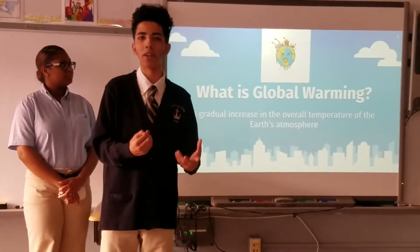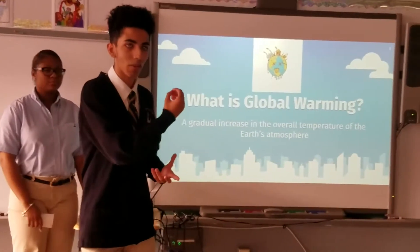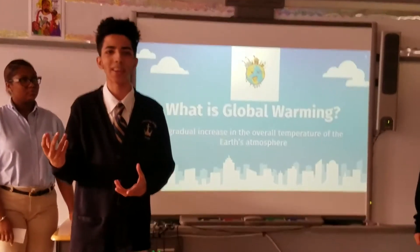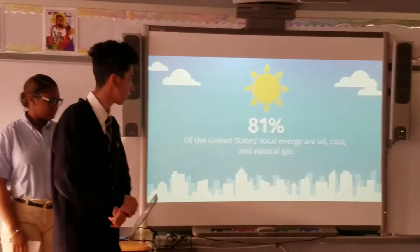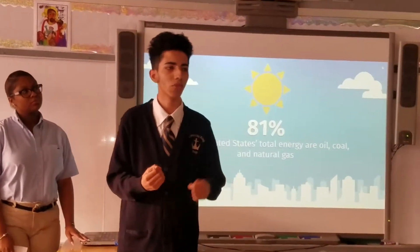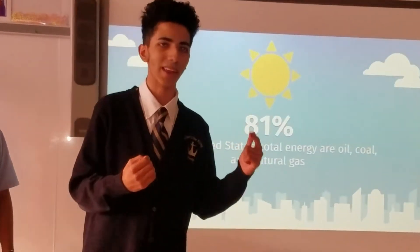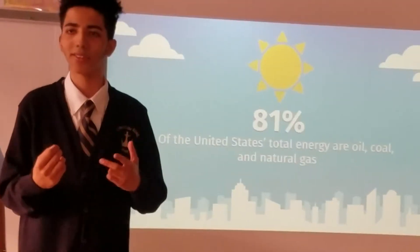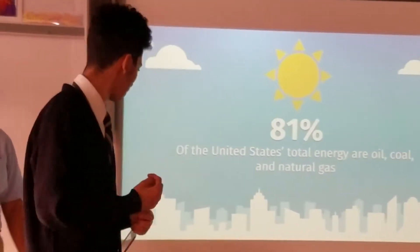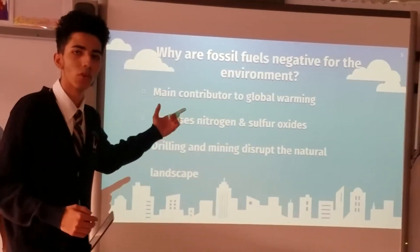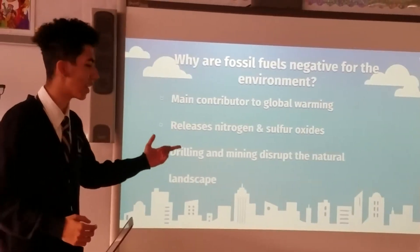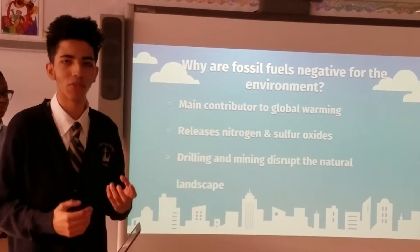Looking through the environmental perspective, how can global warming affect the environment in a negative way? 81% of the United States' total energy comes from oil, coal, and natural gases. These are used in a negative way when burned because they release CO2 carbon emissions. They are the main contributor to global warming, releasing nitrogen and sulfur oxides. Drilling and mining also disrupt the natural landscape, depriving vegetation from the ground.